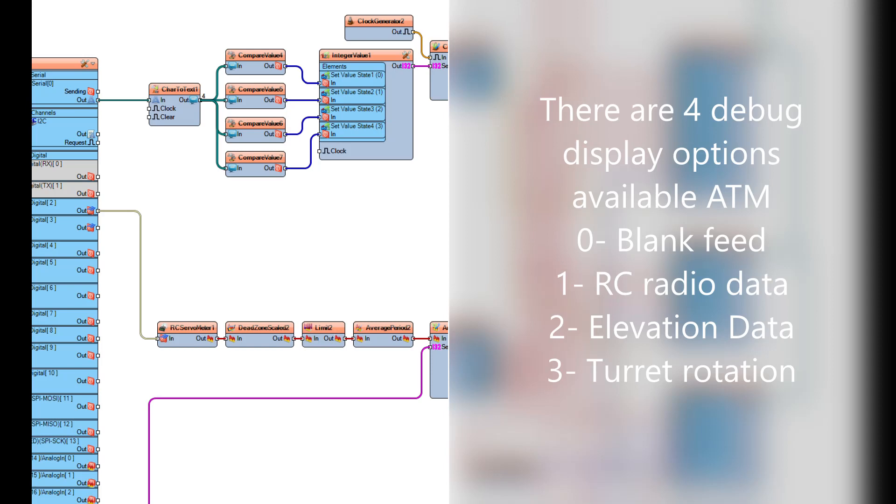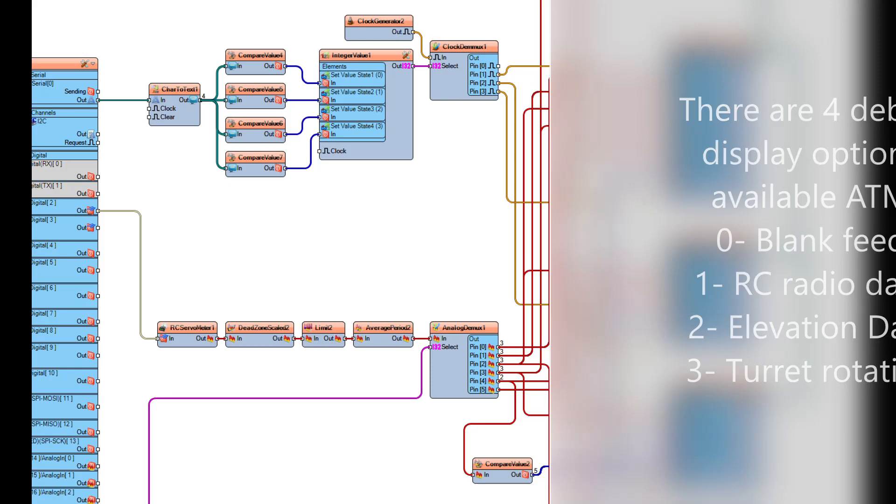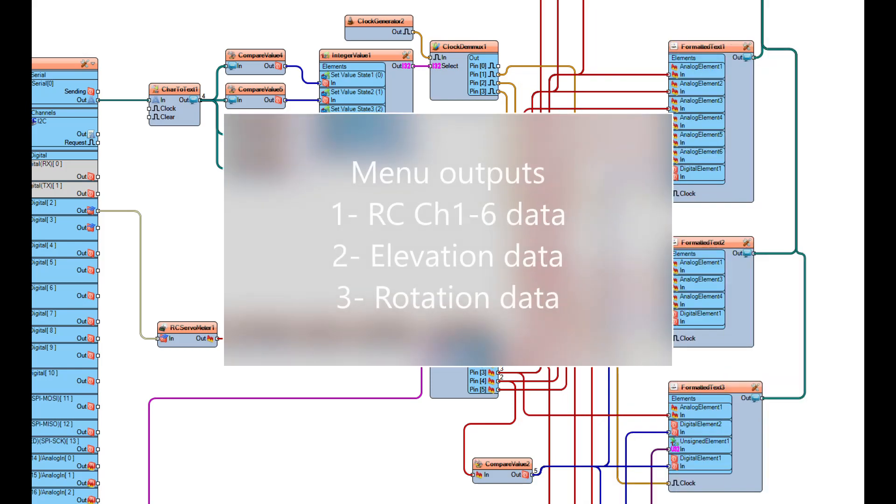If it matches the zero, one, two or three it will then set the integer value for the clock demux. So if you selected one, two or three you're going to get one of the outputs on the far right there: the RC channels, the elevation or the slew.